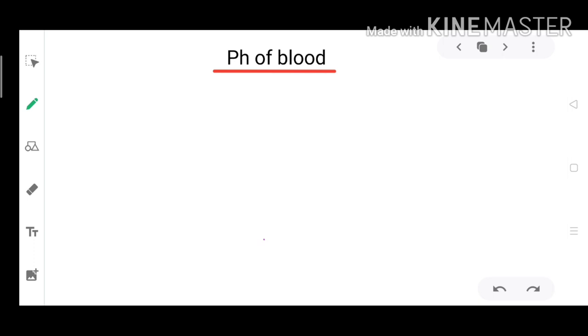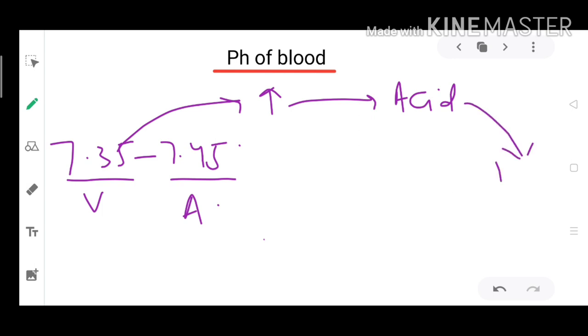Next is pH of blood. Normal pH of blood is between 7.35 to 7.45. 7.35 is venous blood pH and 7.45 is arterial blood pH. Whenever pH of blood increases, body produces more acid which brings pH back to normal.